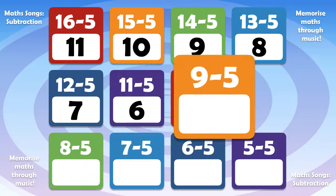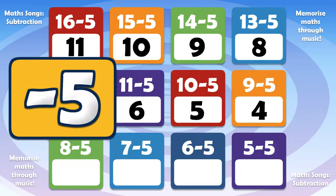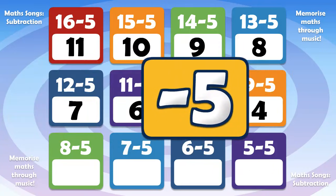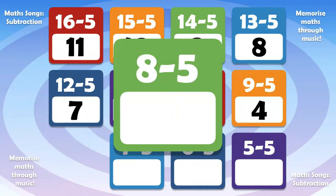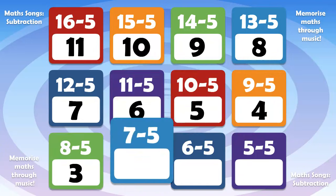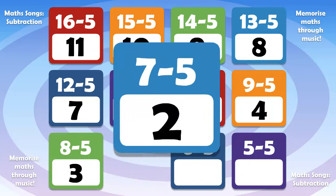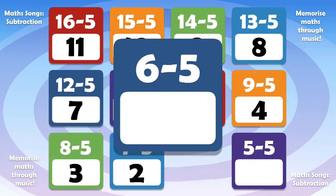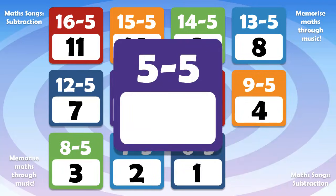9 minus 5 is 4. 8 minus 5 is 3. 7 minus 5 is 2. 6 minus 5 is 1. 5 minus 5 is 0.